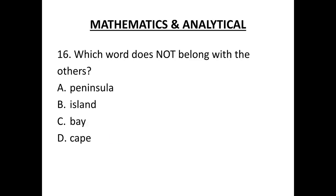Which word does not belong with the others? Peninsula, island, bay and cape. The correct option is bay. A bay is a body of water while all others are landforms.